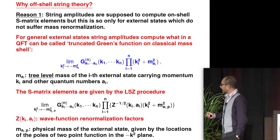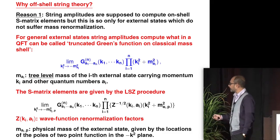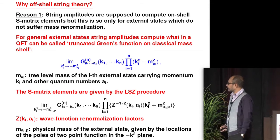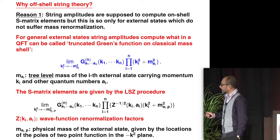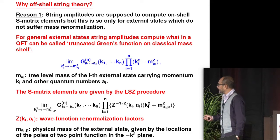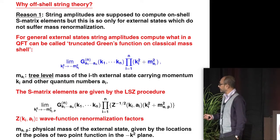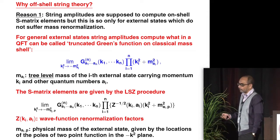So imagine that you have a quantum field theory with some momentum-space Green's function G_N, with external quantum numbers A1 to AN and momenta K1 to KN. What string amplitudes compute is this Green's function multiplied by the inverse propagators for each of the external legs, and then in the limit when external legs are put on-shell — but this on-shell refers to the tree-level mass shell condition, which is forced on us by conformal invariance.